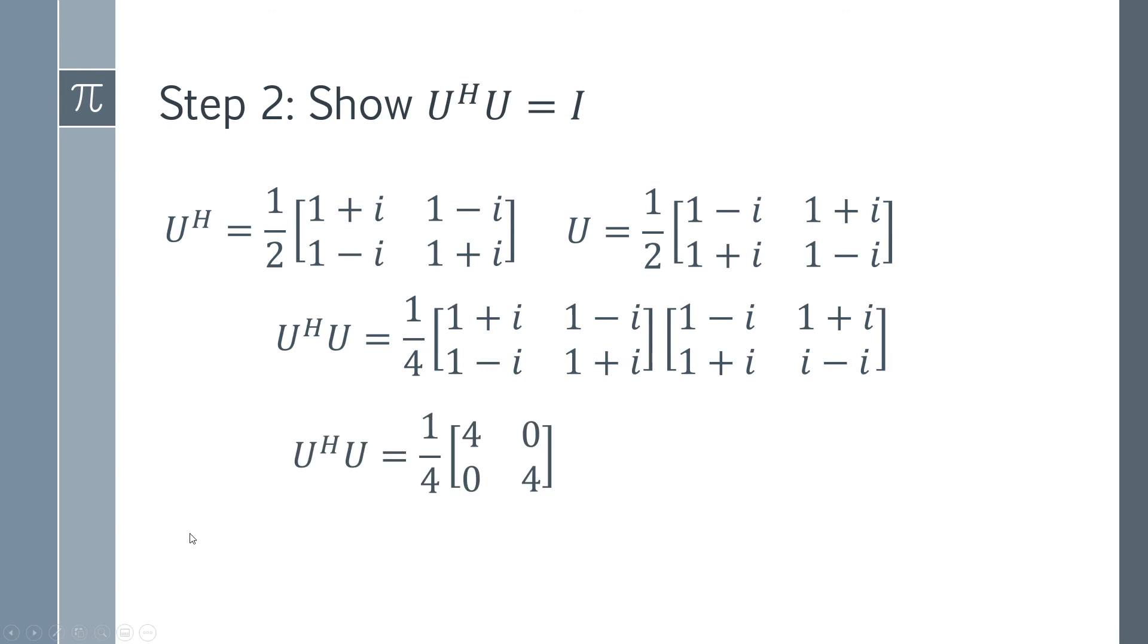So you go through all the steps for matrix multiplication, this multiplied by these, and that'll give you the element four. Then you do this multiplied by this, this multiplied by this, this multiplied by this, and so on.